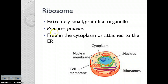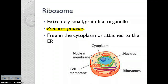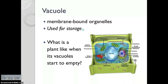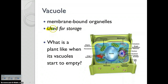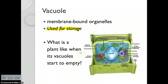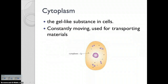Ribosomes are these tiny little organelles found in every type of cell because they are used to produce proteins. Some of them are floating in the cytoplasm; others are attached to the endoplasmic reticulum. The vacuole is the organelle used for storage — like in plants, it's used to store water. When the vacuole is empty, that's when your plant looks all wilted and very sad looking.